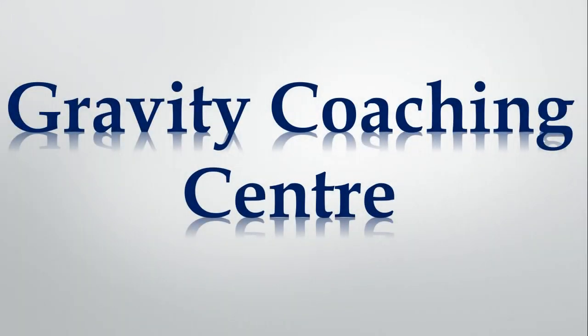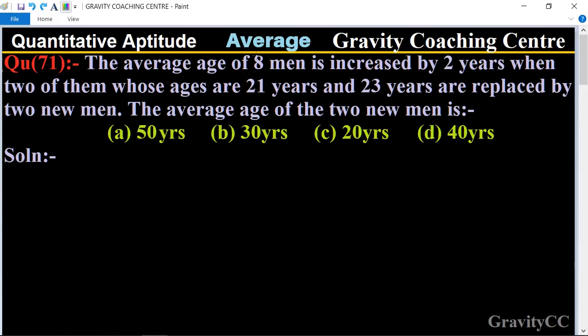Welcome to our channel Gravity Coaching Center, quantitative aptitude chapter average, question number 71. The average age of eight men is increased by two years when two of them whose ages are 21 years and 23 years are replaced by two new men. The average age of the two new men is what?